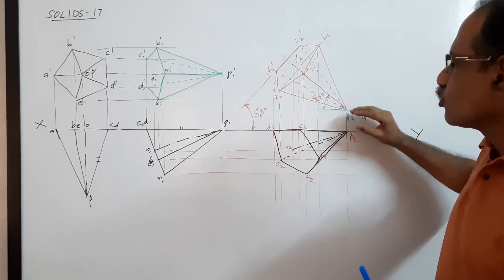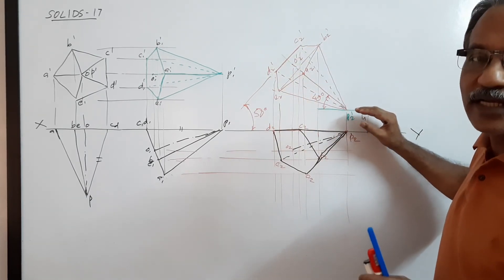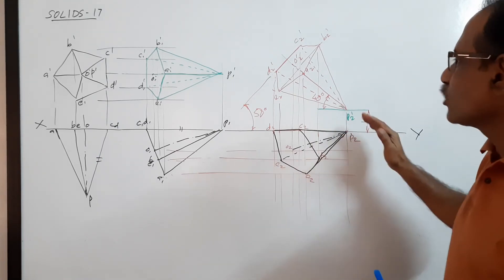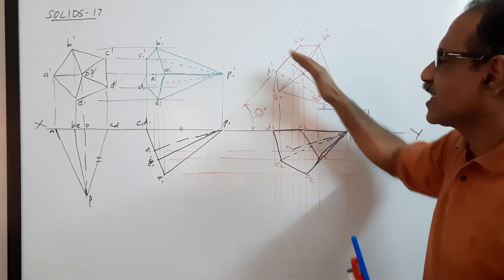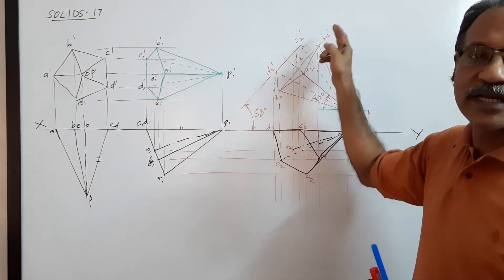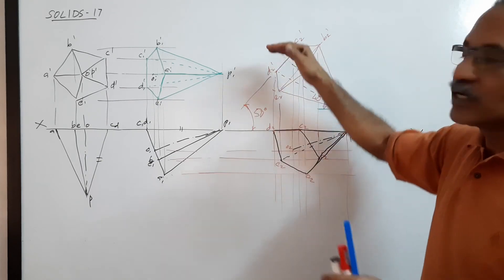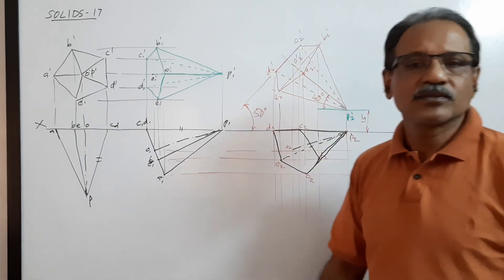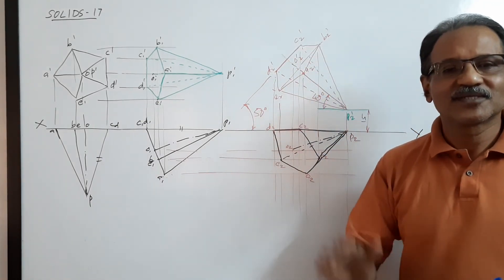Since it is given, you have to ensure that it is 15mm above HP. That is why you draw this 40 degree line first. Otherwise, you can draw the 50 degree line and redraw the derivative. Very good question. Thank you.